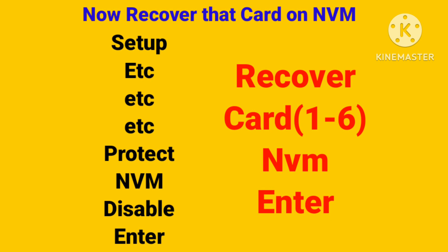All data to NVM: go Setup, etc., and if you need Production Disable — Product Disable — then NVM, then NVM, then Enter, then Recover Card One — or Card Two, any card — then NVM, then Enter. I will show you practically on the panel.